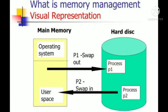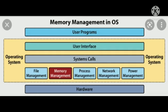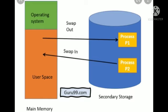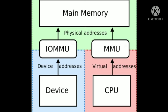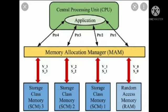This is critical to any advanced computer system wherever more than a single process might be underway at any time. Several methods have been described that increase the effectiveness of memory management. Virtual memory systems separate the memory addresses used by a process from actual physical addresses, allowing separation of processes and increasing the size of virtual address space beyond the available amount of RAM using paging or swapping to secondary storage.